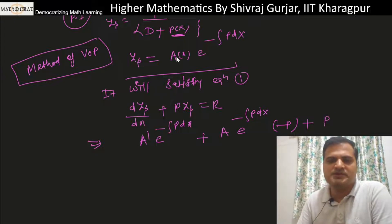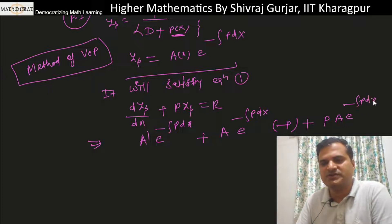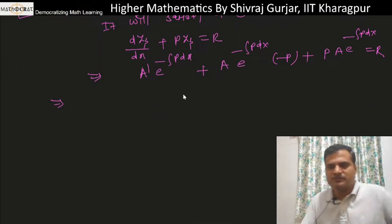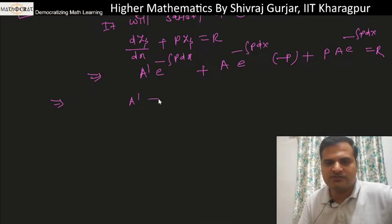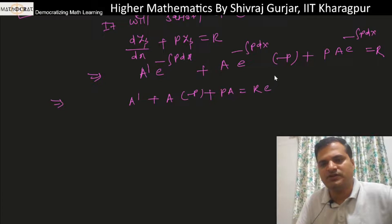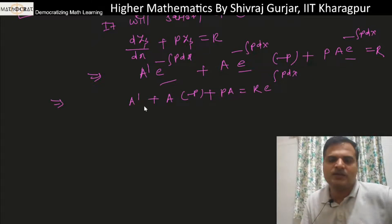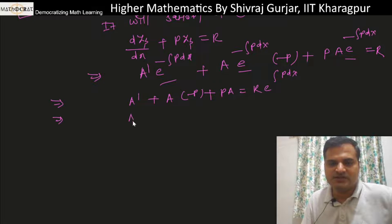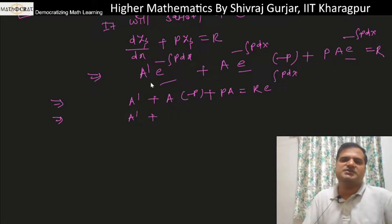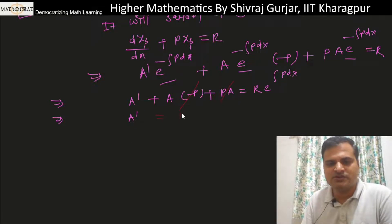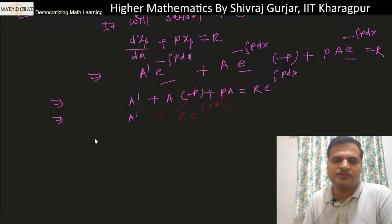After substituting and simplifying, the terms involving a·(−P) and a·P cancel each other, leaving us with: a' = R · e^(∫P dx). This is a key result from the variation of parameters derivation.